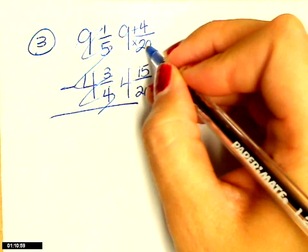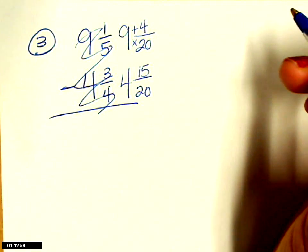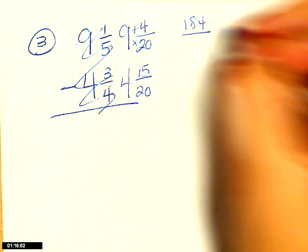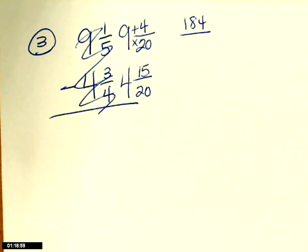Nine, sorry, 20 times nine? 180. 180 plus four is 184. What do I do about my denominator? Keep it.